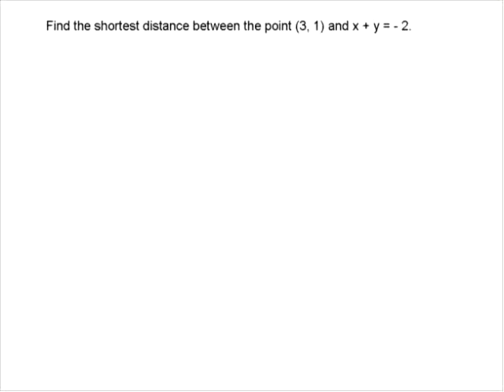We always want to try and do a sketch to start. This line is actually y equals negative x minus 2. Drawing a sketch on our x-y coordinate system, we have a line that goes through negative 2 and passes through those points. The point is at (1, 3), right here. So the shortest distance is going to be the line that is perpendicular to the original line — like so. We're trying to find that distance.